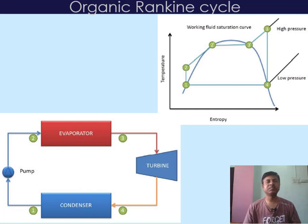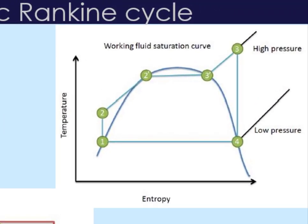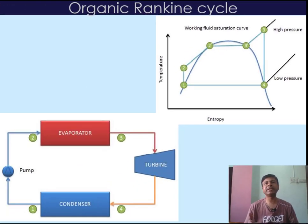In the T-S diagram, from state 1 to 2, an ideal pump executes an adiabatic reversible process to raise the working fluid from the pressure of saturated liquid to the pressure of saturated vapour. From state 2 to state 3, an evaporator heats the fluid at constant pressure, moving from a saturated liquid state 2' to a saturated vapour state 3', where all the liquid becomes vapour. Then the fluid is superheated until it reaches state 3.